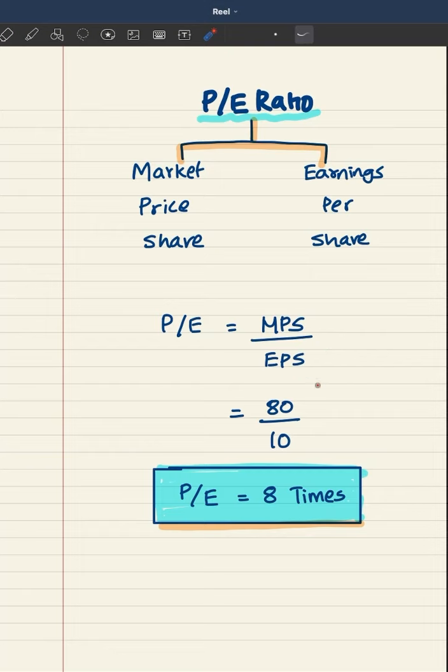The market price is 80 rupees, earnings per share is 10 rupees. If I calculate, it's 80 by 10, and what you get is 8.